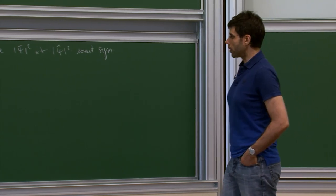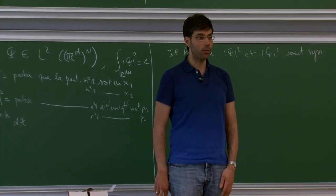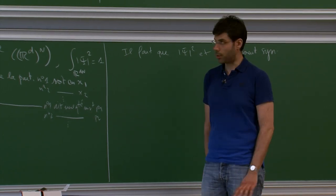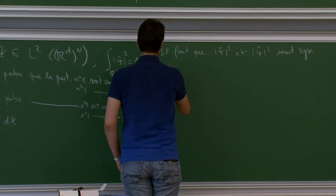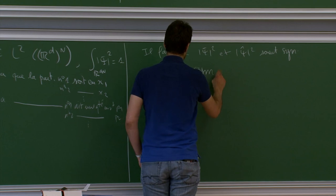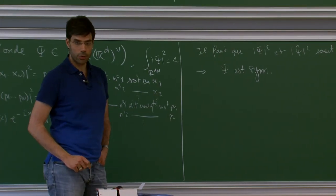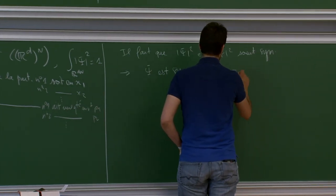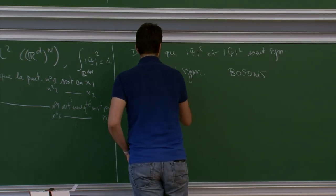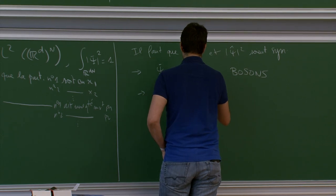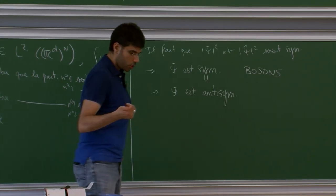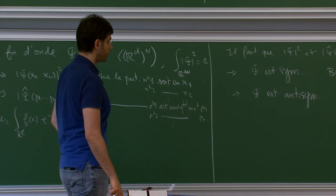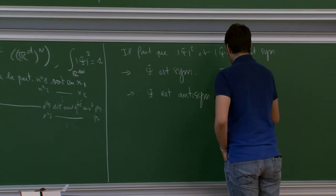We need |ψ|² and |ψ̂|² to be symmetric with respect to exchanges of the variables, exchanges of the indices. This is not a very convenient constraint, because in quantum mechanics we must work in a Hilbert space, so it must be a linear constraint. We must translate it into a constraint on ψ itself, not on |ψ|² and |ψ̂|². There are essentially two choices: either ψ is itself symmetric, in which case the square and the Fourier transform will both be symmetric — these describe particles called bosons.